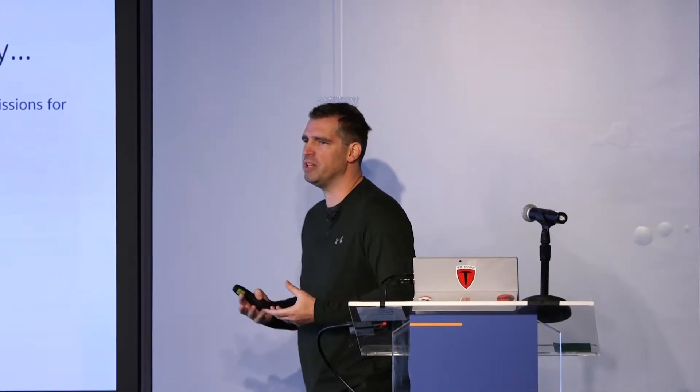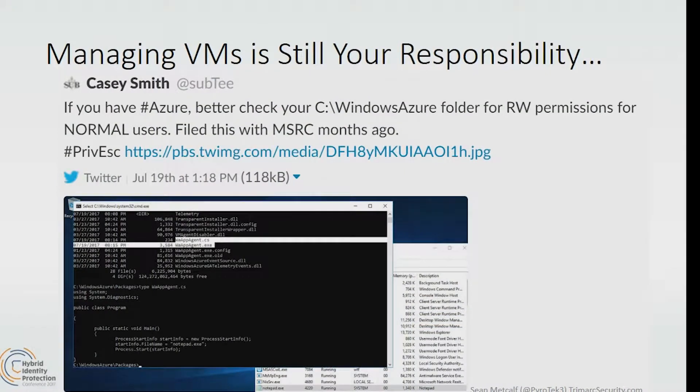Managing VMs is still our responsibility when we go to the cloud. Casey Smith tweeted over the summer that he found some interesting things in an Azure VM — and this is not just Azure. When the cloud VM is instantiated and spun up, there are agents and other things running on it for the cloud provider to manage that system. Do you know what those are and how they work? He's pointing out a privilege escalation which could leverage going from a user to an admin.